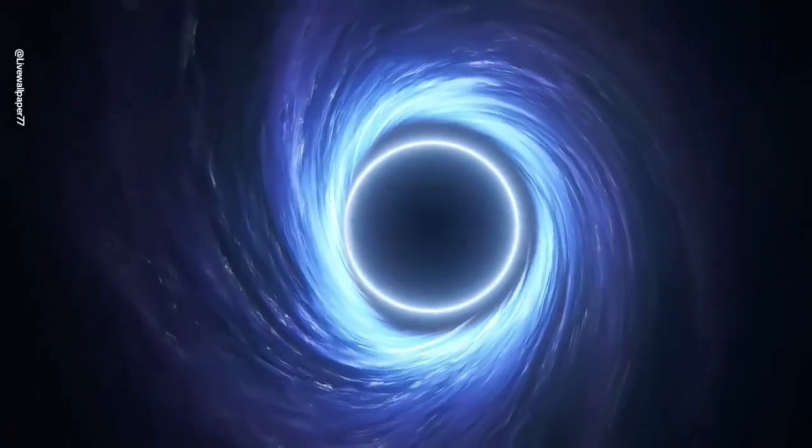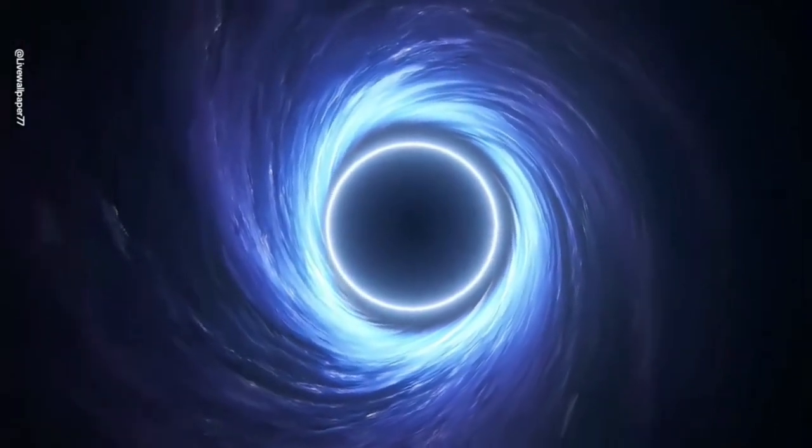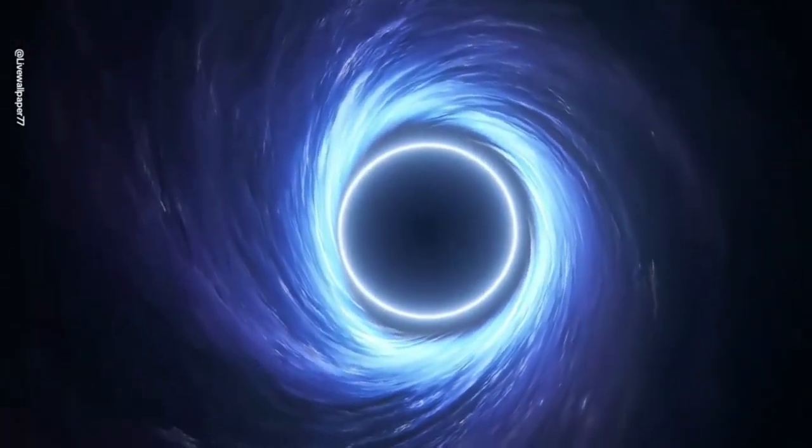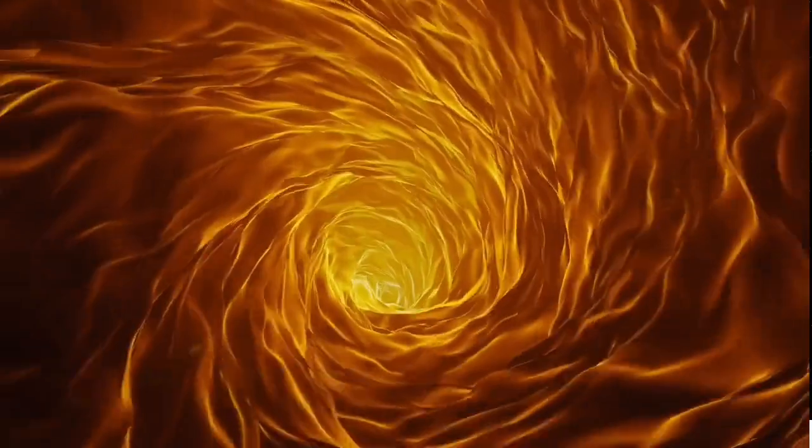This black hole was named Cygnus X1, and it is situated in the constellation of Cygnus, about 6,000 light years from Earth. It was no small discovery. It's many times brighter than the sun, and of course, incredibly dense, which gives it a strong gravitational pull. For this reason, it is known as a black hole.